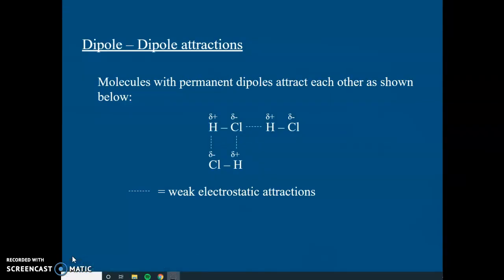So here we are, permanent dipole-permanent dipole attractions, or just dipole-dipole attractions. These occur between molecules with dipoles in them, a delta plus and a delta minus. And you can see here that it's a weak electrostatic attraction between a delta minus and a delta plus. These are stronger than the London dispersion forces simply because they are there all the time. But they're not as strong as hydrogen bonding.